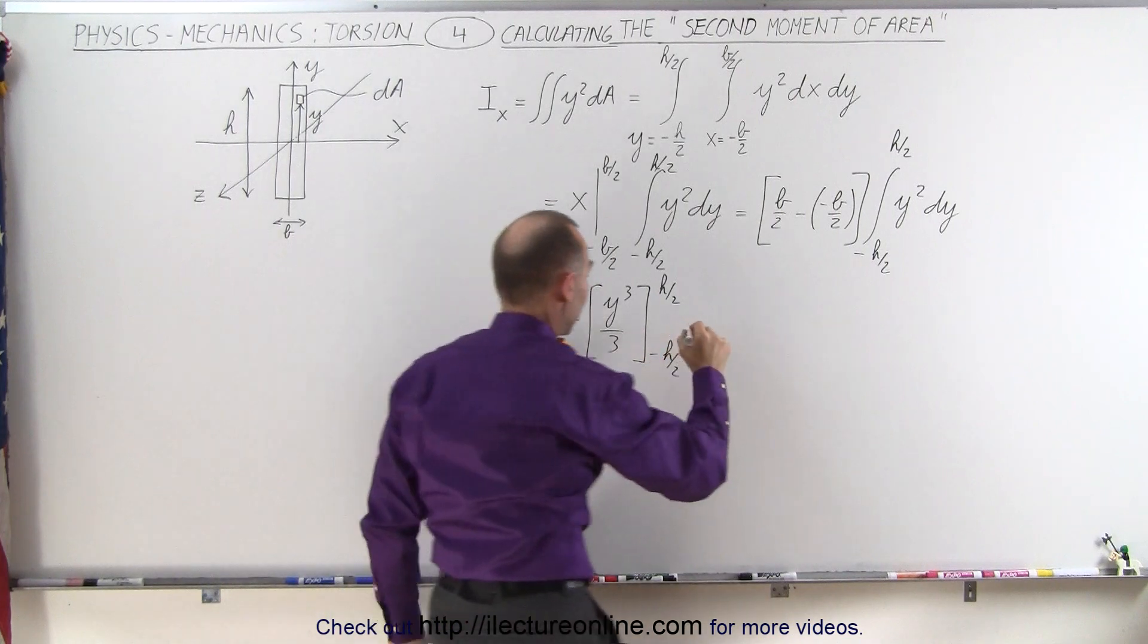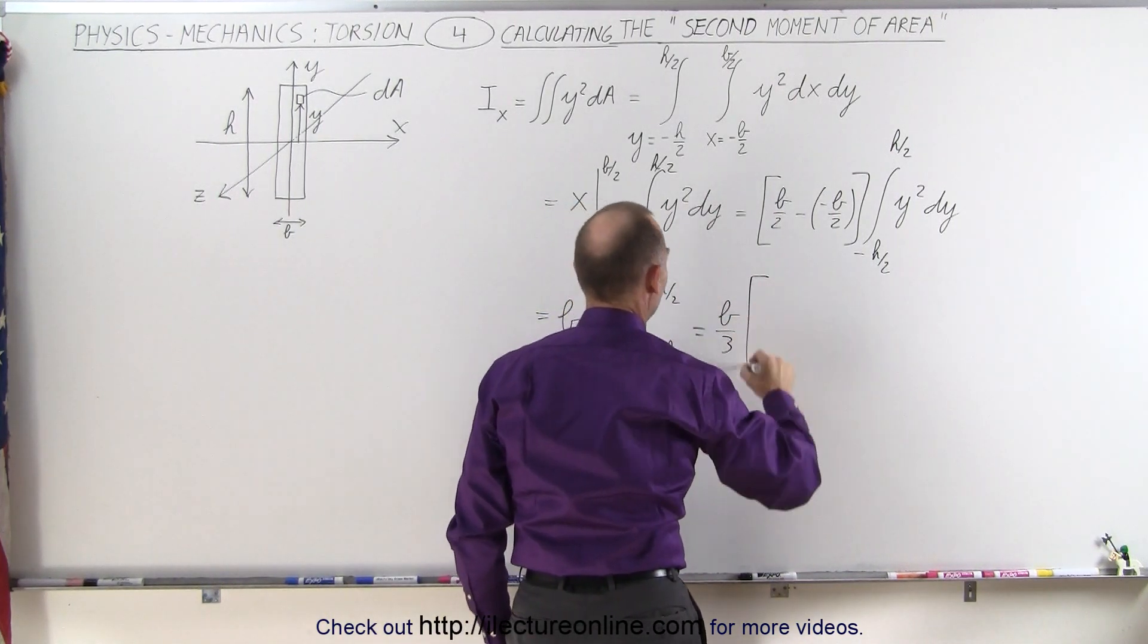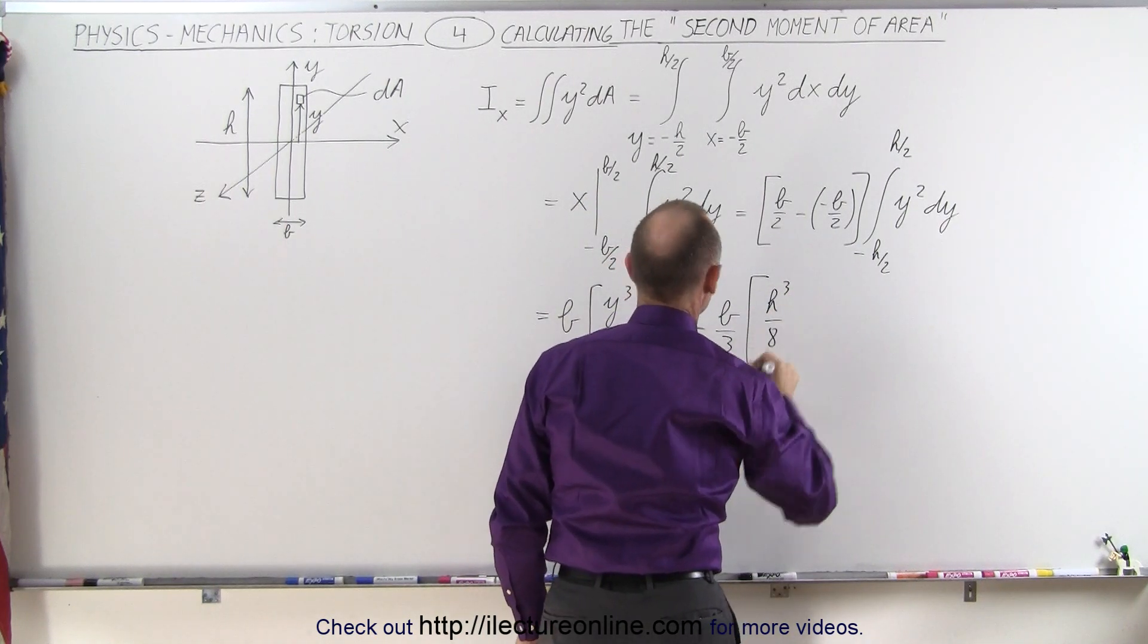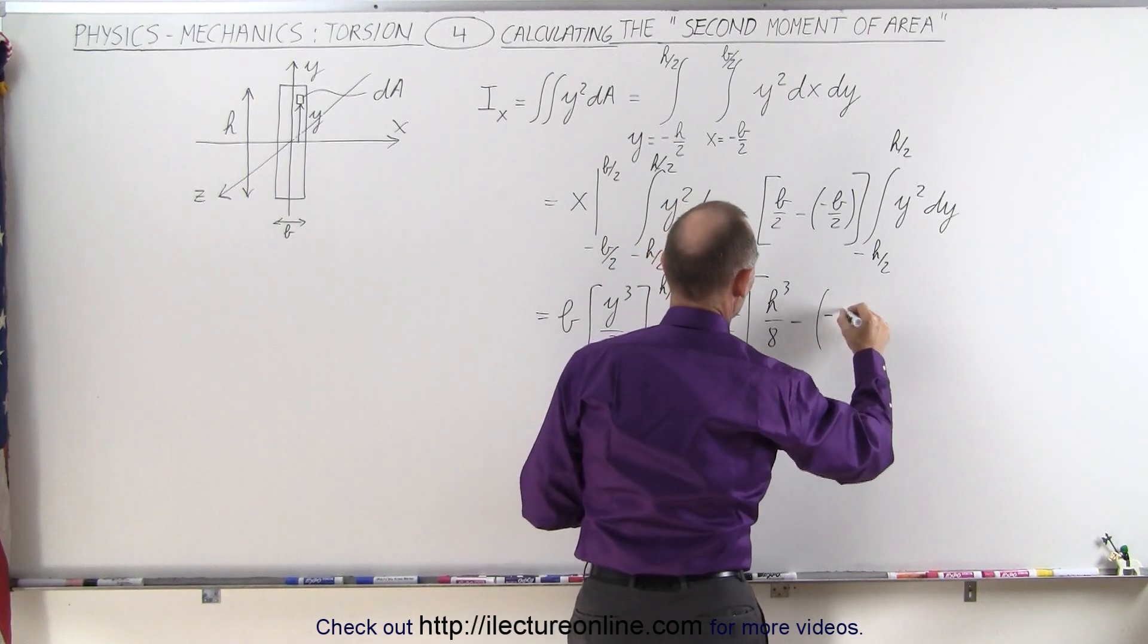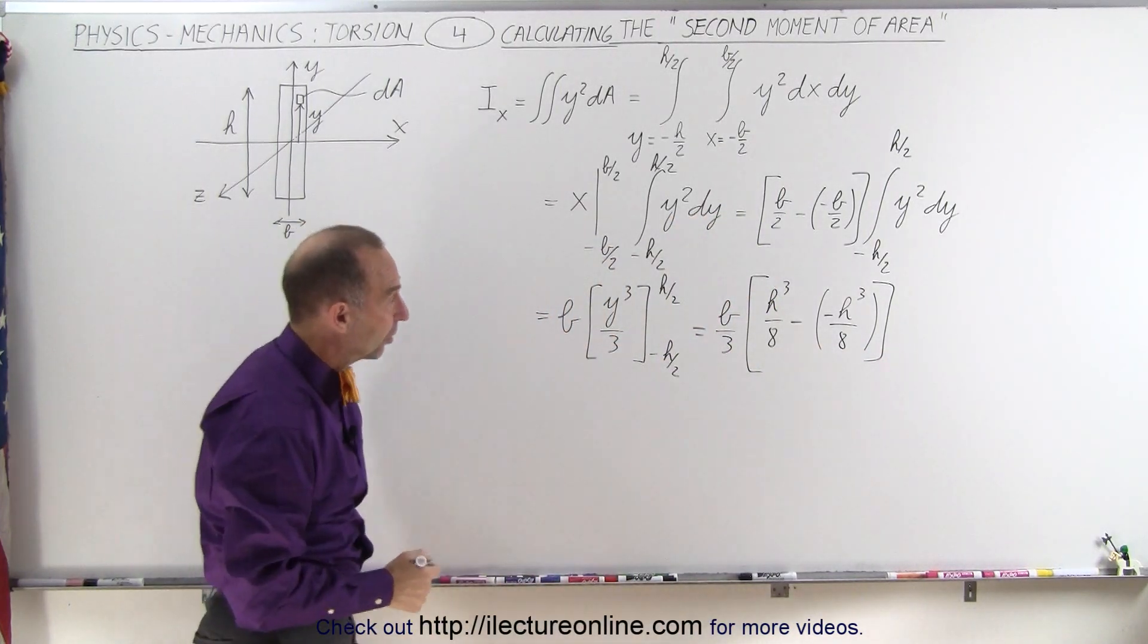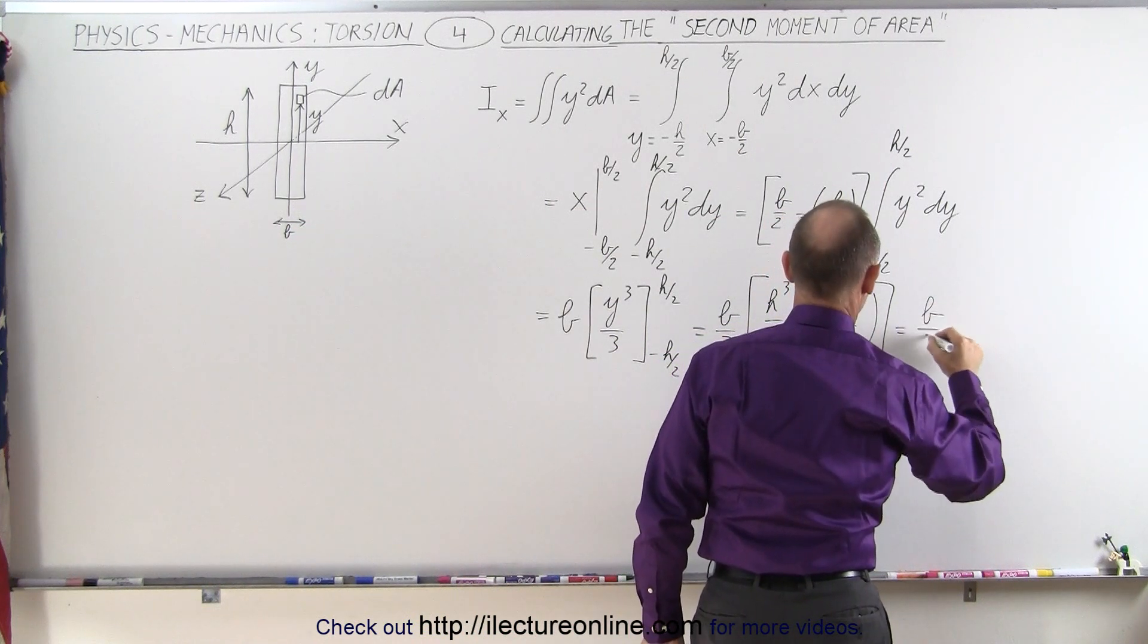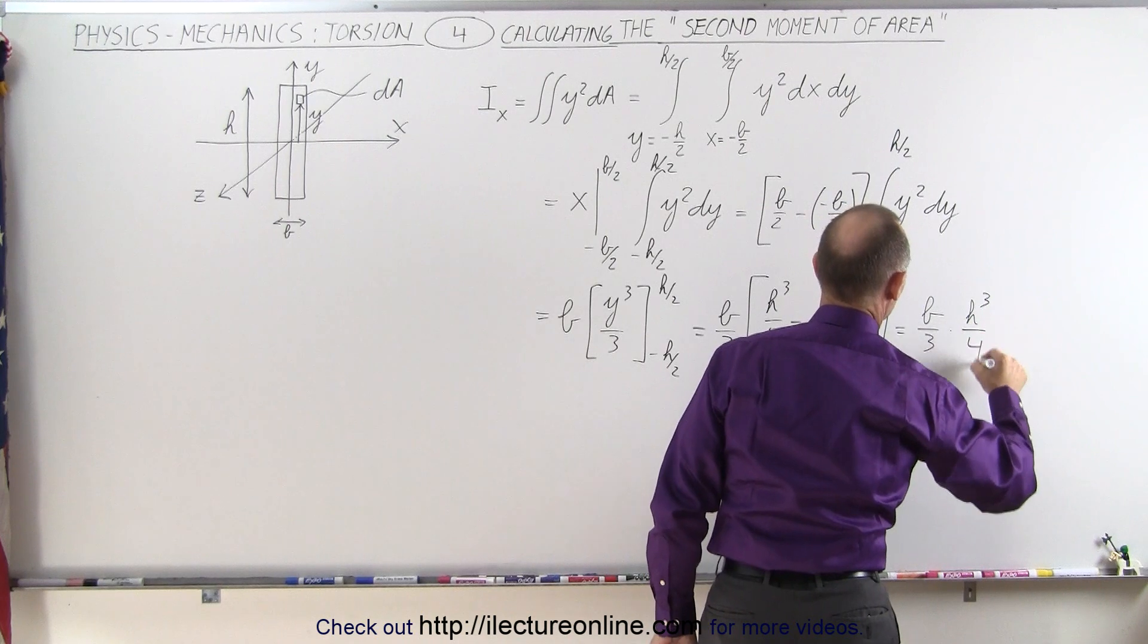So we plug in the limits, we get the following. So we'll pull the 3 out, we get b over 3 times upper limit that gives us h-cubed over 8, because 2-cubed is 8, minus a minus h-cubed over 8. Of course, the minus will cancel out the minus, so this will give us b over 3 times h-cubed over 4.